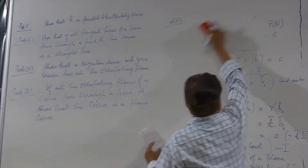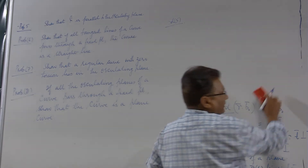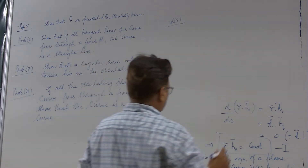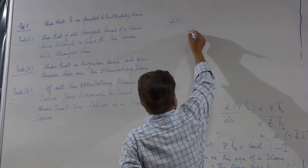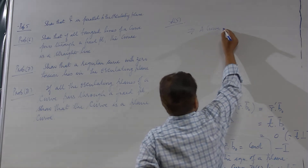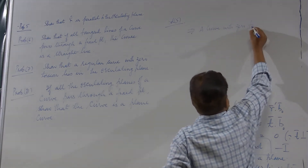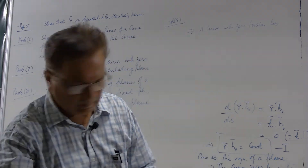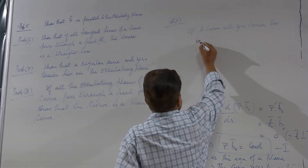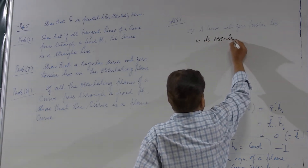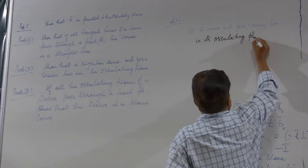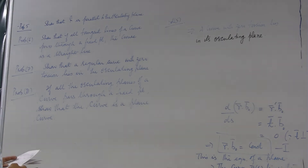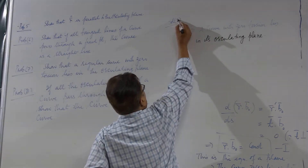So the conclusion is: a curve with zero torsion lies in its osculating plane. This is an important fact we should keep in mind. This solves problem number 7.